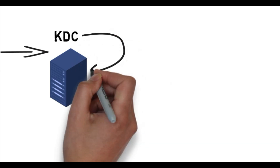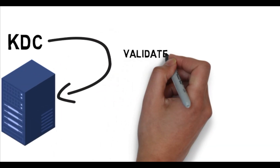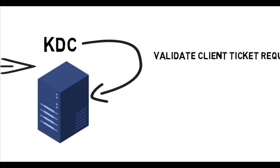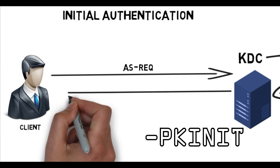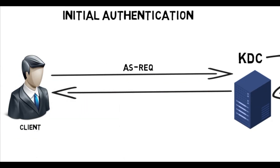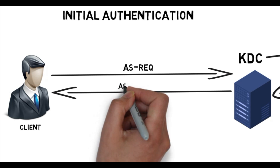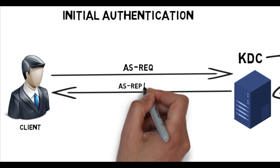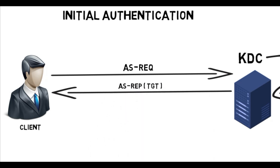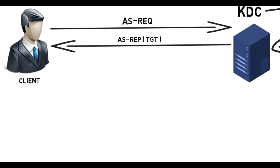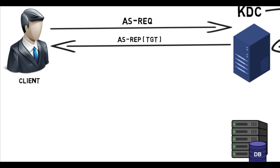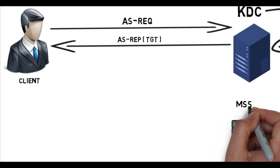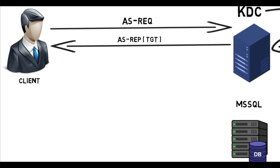The KDC verifies the user credentials, and if valid, it responds with an AS-REP which includes the TGT encrypted with the KDC secret key — the krbtgt password hash.